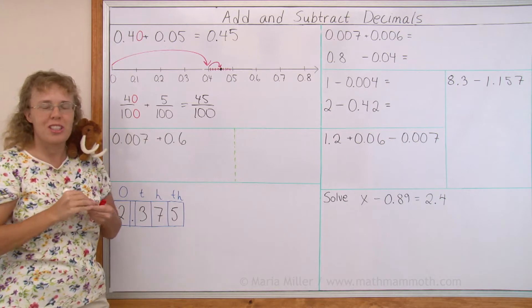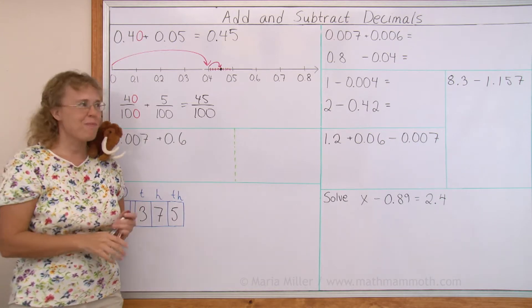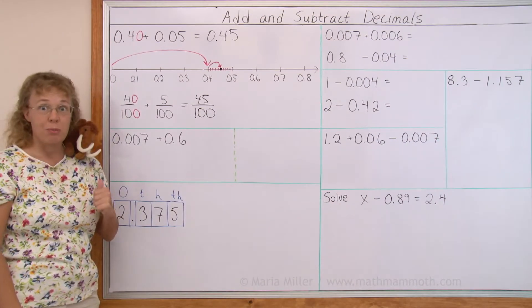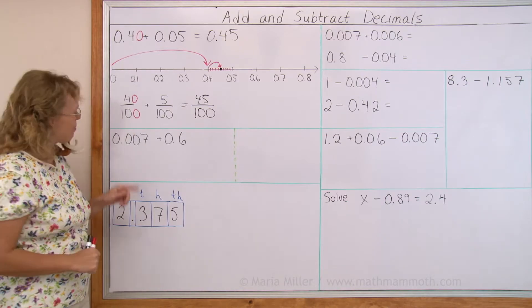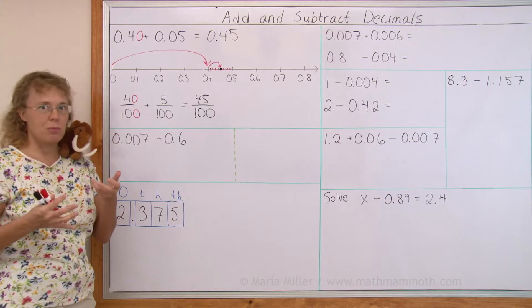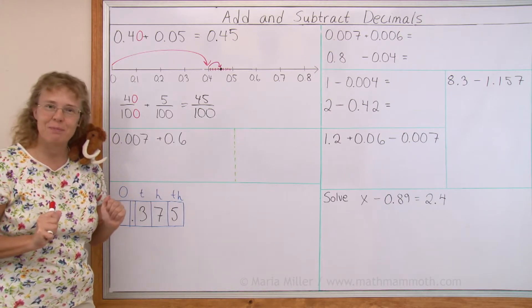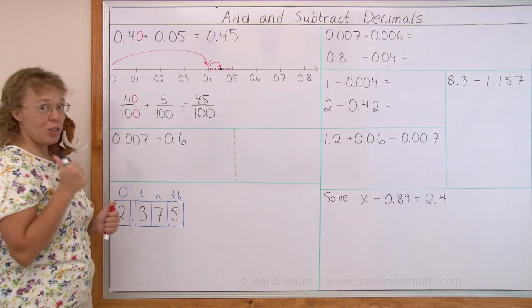So just be sure and avoid this common mistake, okay? Now let's try this problem and see if you understood. Here's 0.007 plus 0.6. Is the answer going to be 0.13 or something like that? Not at all.